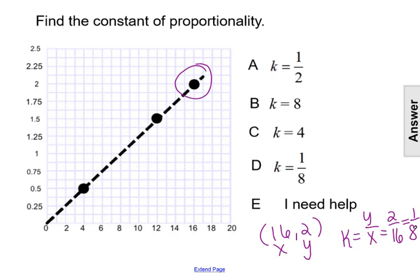So k equals 1 over 8, the constant of proportionality 1 over 8, making our answer choice D.